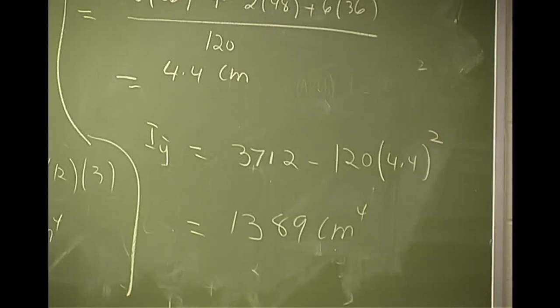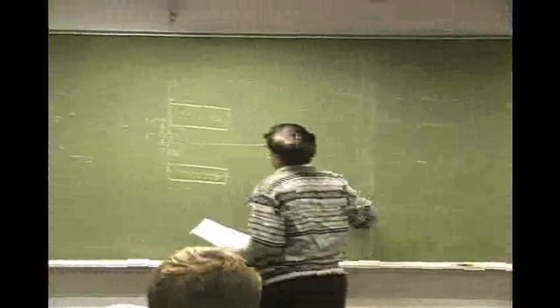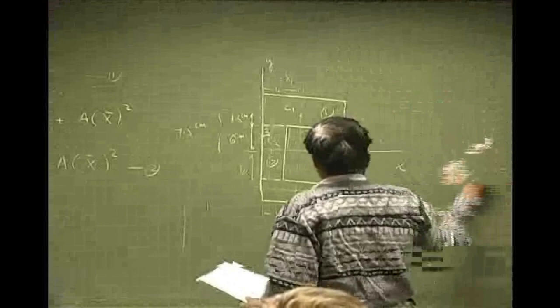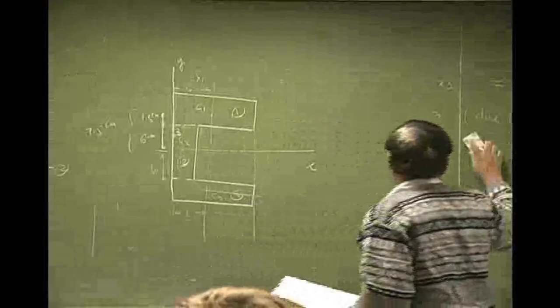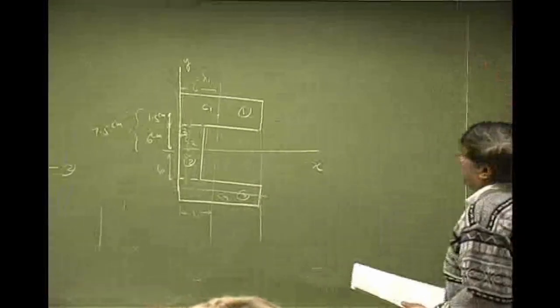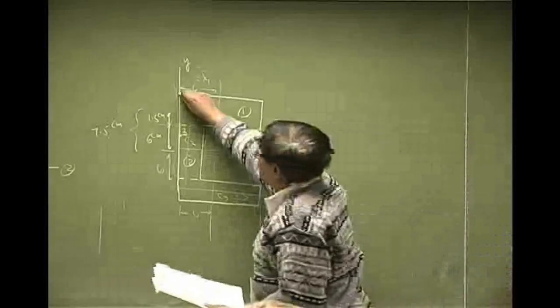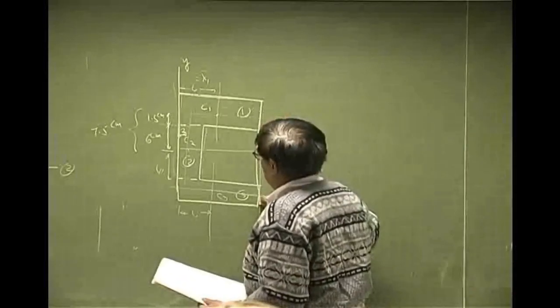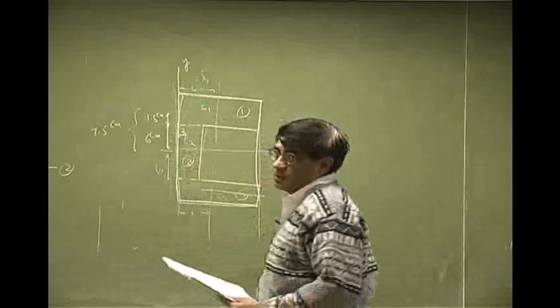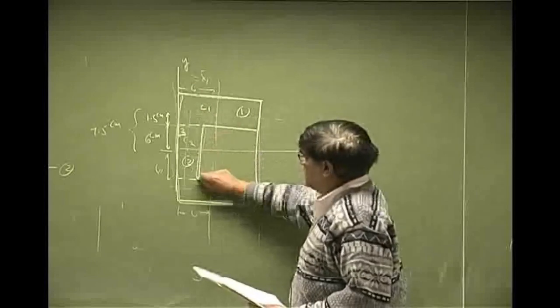Now this is not the only way of doing this problem. I could think of this problem as just two rectangles. I could say this is rectangle one, this one, one big block minus this rectangle.